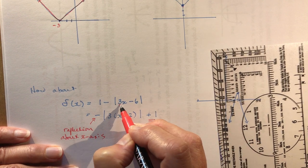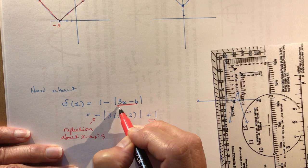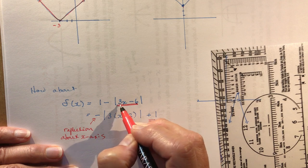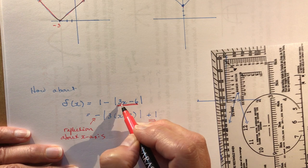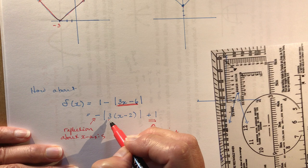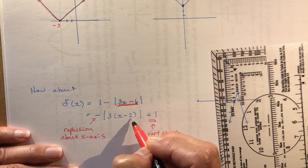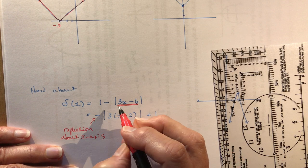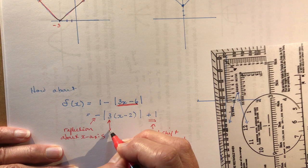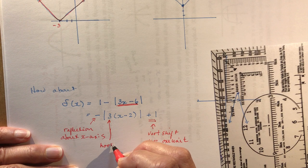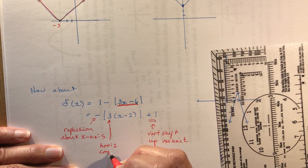And be careful with these, teachers always try to fool you with these x values where you need to factor out something first. So I factored out the 3, I have x minus 2, and so this is a horizontal compression, horizontal compression by a factor of one-third.